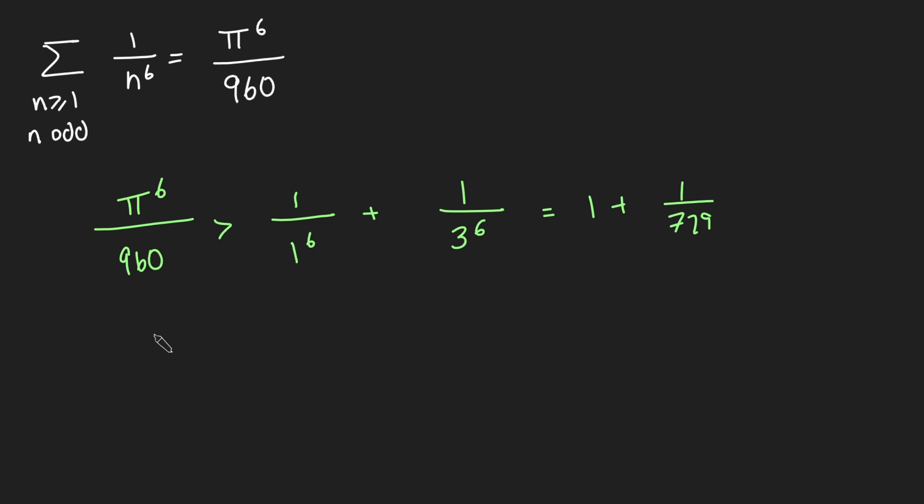And now if I multiply both sides by 960 I get pi to the 6 is bigger than 960 plus 960 over 729. But of course 960 over 729 is pretty clearly bigger than 1 and so this is going to be bigger than 961.